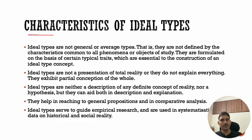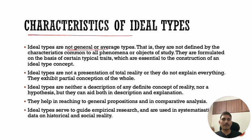Ideal types are thus a selection of certain elements, certain traits or characteristics which are distinctive and relevant to the study undertaken. Now we will see a few characteristics of ideal types. They are not average types of anything. They are not defined by the characteristics common to all phenomena, but are formulated on the basis of certain typical traits which are essential to the construction of an ideal type concept.